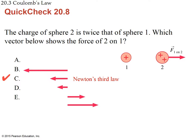The answer is C. By Newton's third law, the force of 2 on 1 has exactly the same magnitude as the force of 1 on 2, but points in the opposite direction. So we look for a vector of the same length pointing the opposite way.